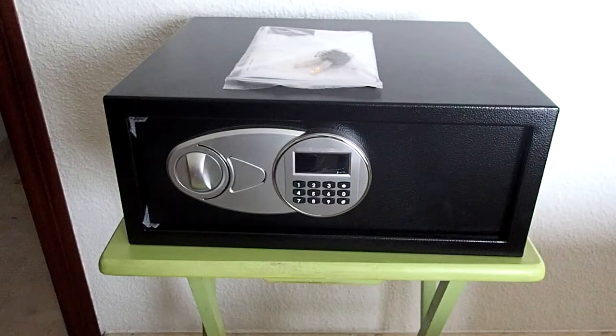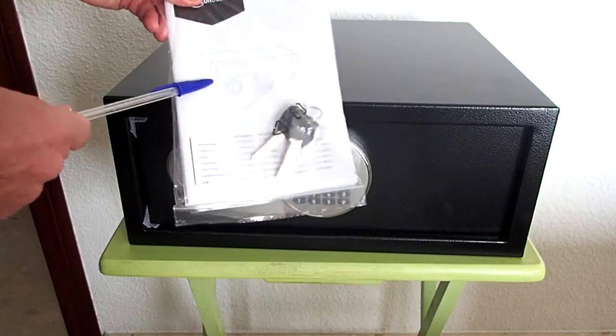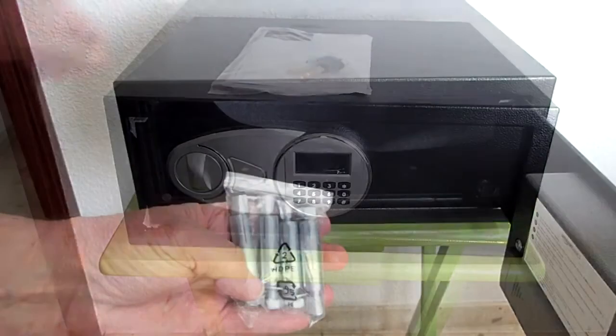What do you get in the box? The safe itself, owner's manual and two emergency keys. Inside the safe we should find four expansion bolts.